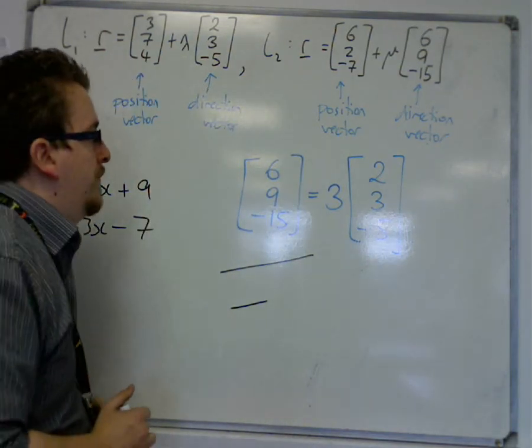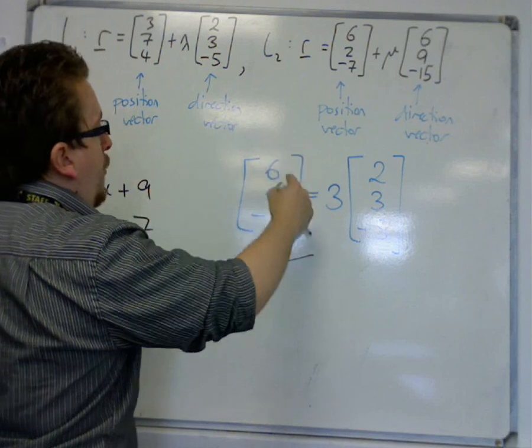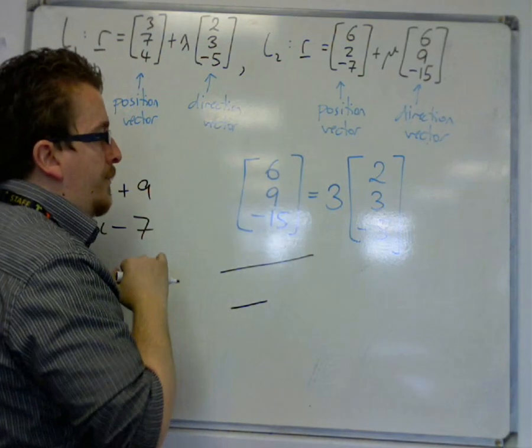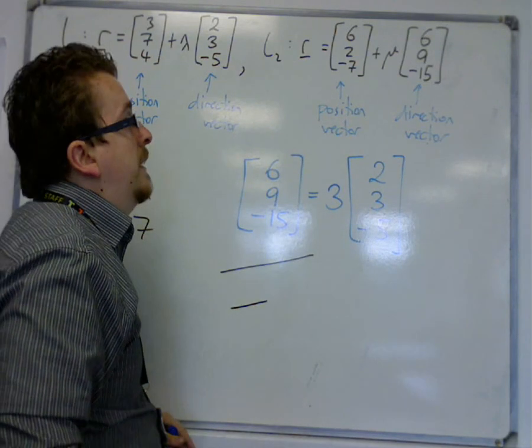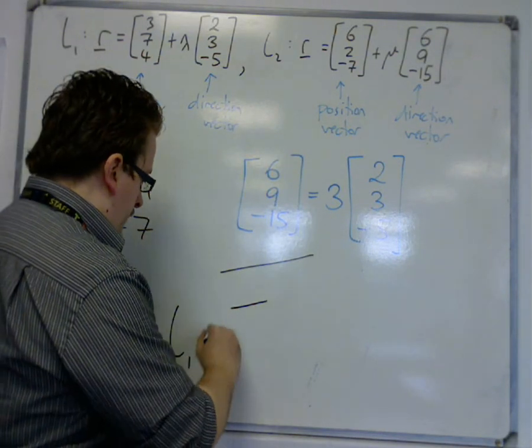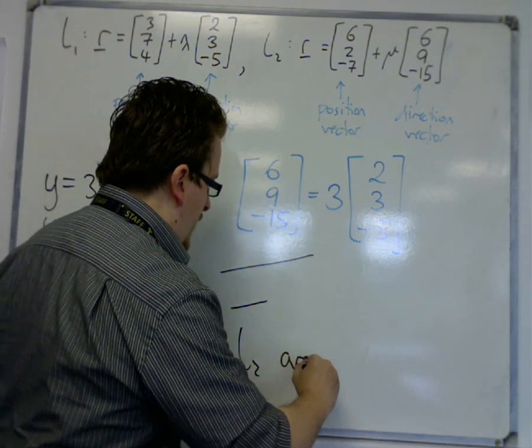But they're still parallel. So, that means because I can write 6, 9, minus 15 is equal to three lots of the other direction vector, this means that L1 and L2 are parallel.